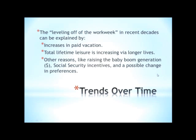There are some other explanations. Raising the baby boom generation was very expensive because it was a very large generation, so people had to work more, and that trend could have slowed down there. Social Security also provides some perverse incentives to retire earlier but work more while working, because Social Security benefits are based on your highest years of earnings — giving you an incentive to have years of high earnings. In the absence of Social Security, somebody might spread out their work over their whole life, work until they were 75 but work less each year on average. And it could also just be a change in preferences — that we have enough leisure now and don't really prefer any more.